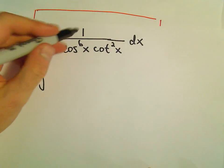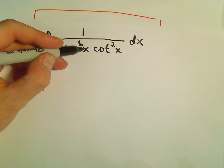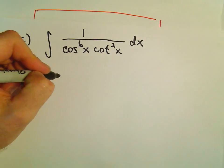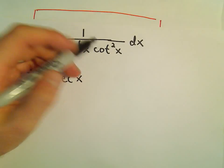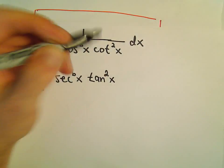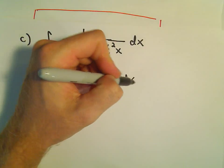Recall that 1 over cosine of x is secant x. So in this case, we'll have secant to the sixth power of x. And 1 over cotangent is just tangent, so we'll have tangent squared x dx.